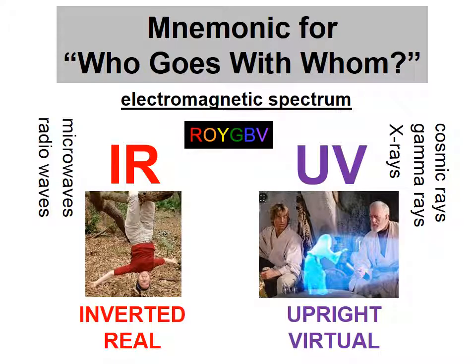It also turns out that inverted images are always real images. Upright images are always virtual. In other words, inverted and real (IR) go together. Upright and virtual (UV) go together. If you remember that IR is kind of an abbreviation for infrared and UV is an abbreviation for ultraviolet, that might help you remember that inverted images are always real images and upright images are always virtual.